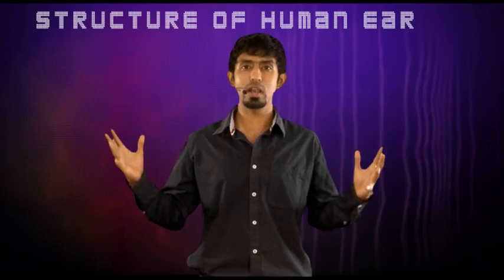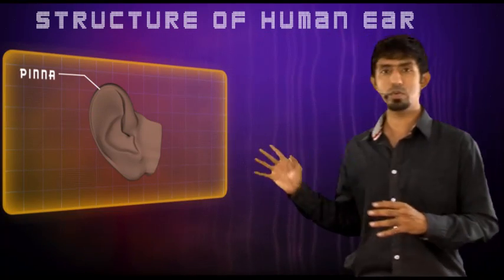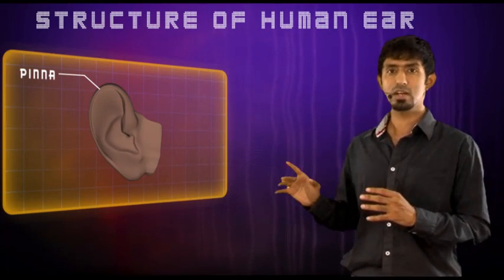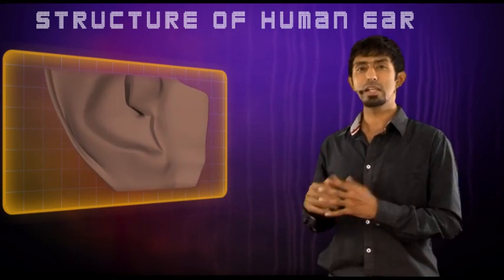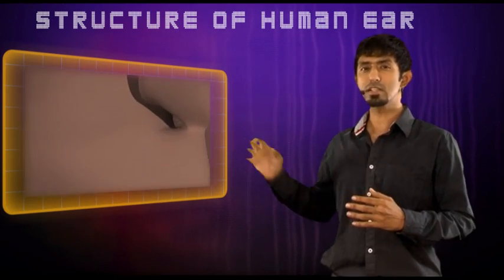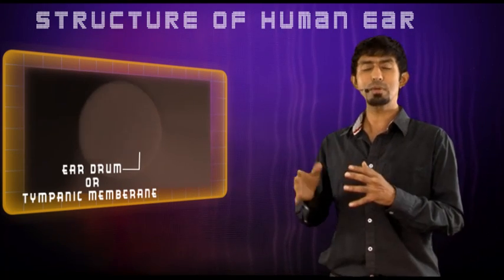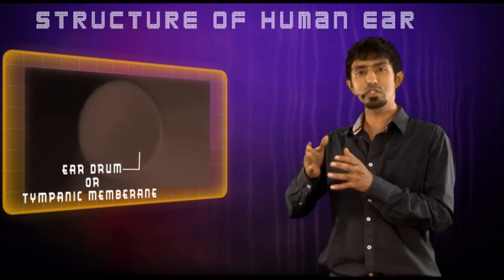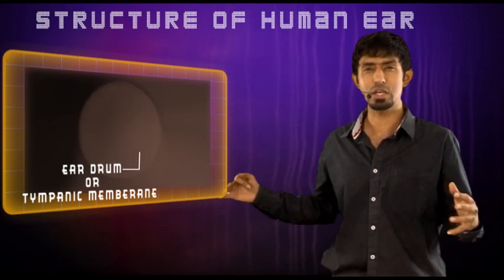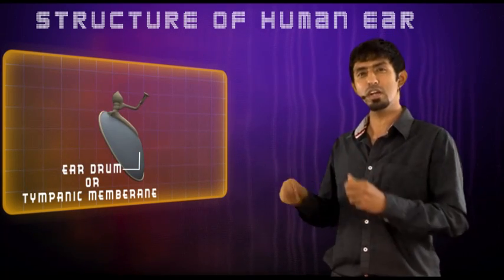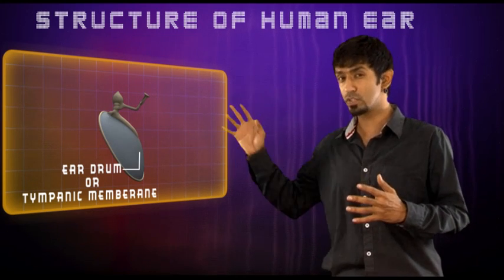We all have this outer ear called the pinna. The compressions reach this outer ear, which directs the sound inside, takes it through the canal, and makes it reach what's called the eardrum or the tympanic membrane. This membrane feels those compressions and rarefactions — it vibrates along with them. That's why it's called a drum; it's a very thin membrane stretched out that begins to compress and relax based on those waves.